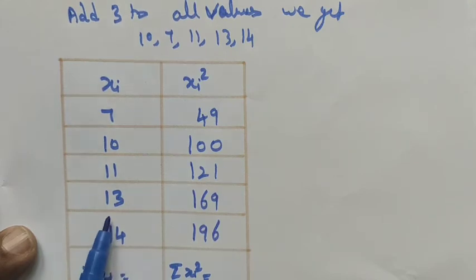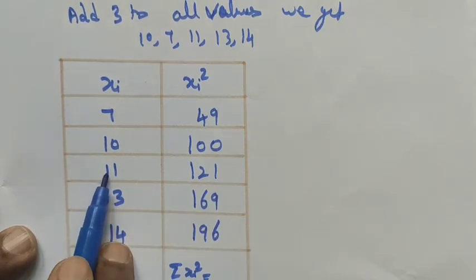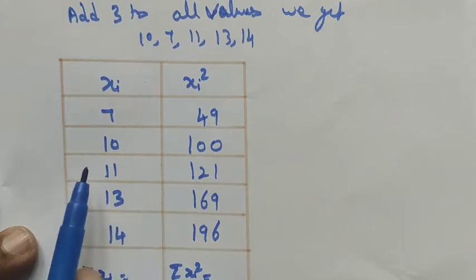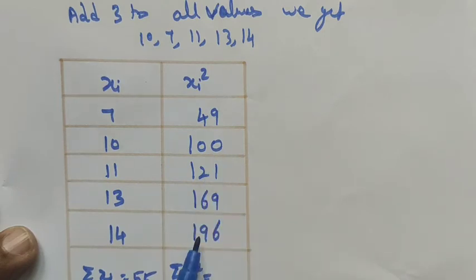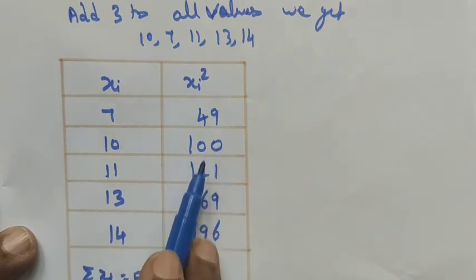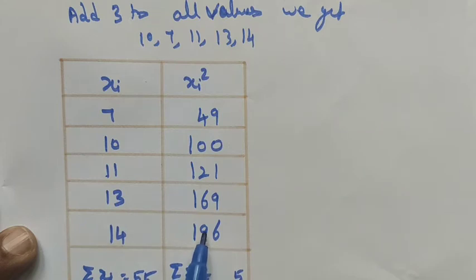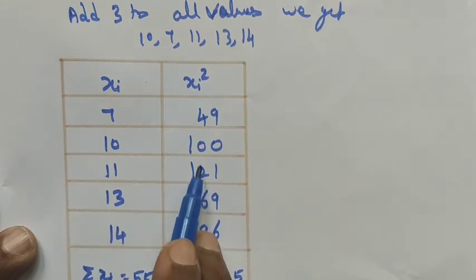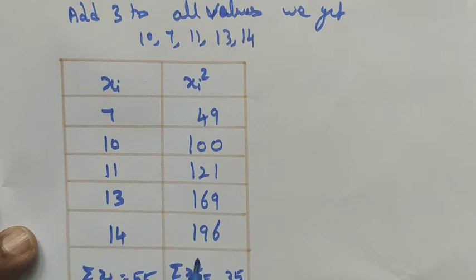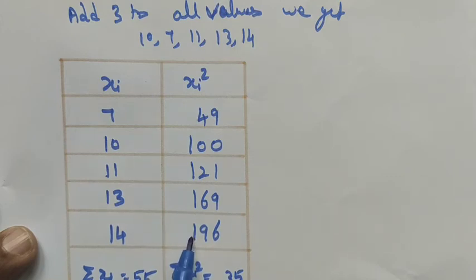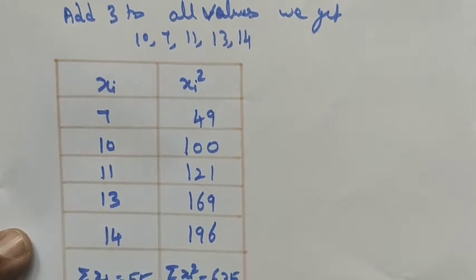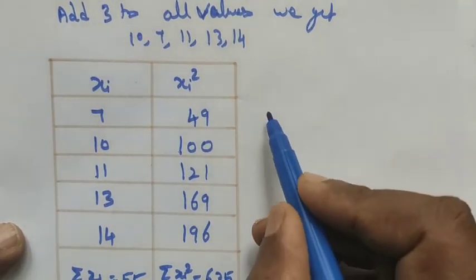The sum of the squared values for the new data: 49 + 100 + 121 + 169 + 196. Adding step by step: 49 + 100 = 149, + 121 = 270, + 169 = 439, + 196 = 635. So the summation of xi² for the new data equals 635.